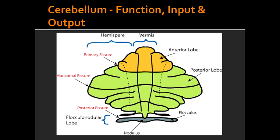What are the deep cerebellar nuclei from lateral to medial? The deep cerebellar nuclei from lateral to medial include dentate, emboliform, globose, and fastigial.